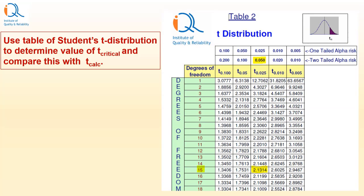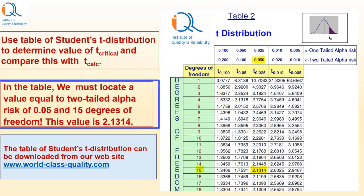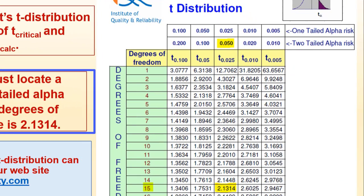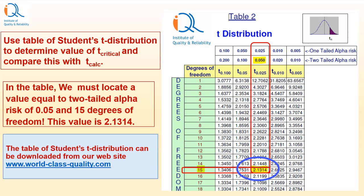Use table of student's T distribution to determine the value of T critical and compare this value with the calculated value of T statistic which is T calc. This is the table of T distribution which can be downloaded from our website www.world-class-quality.com. In the table, we must locate a value equal to 2-tailed alpha-risk of 0.05 that means 1-tailed alpha-risk of 0.025 and 15 degrees of freedom. This value is 2.1314 as you can see here.